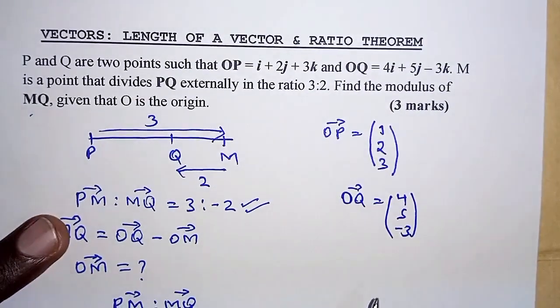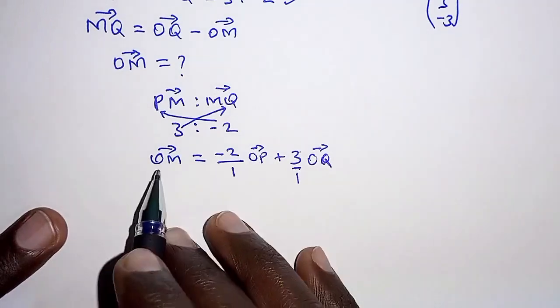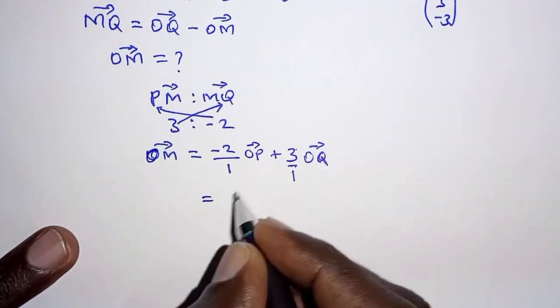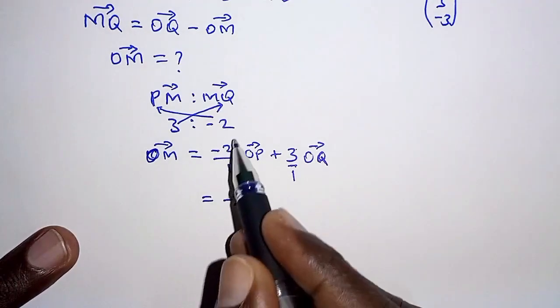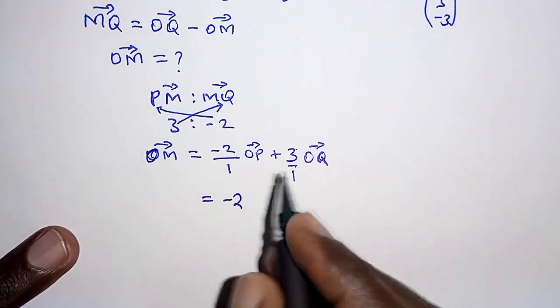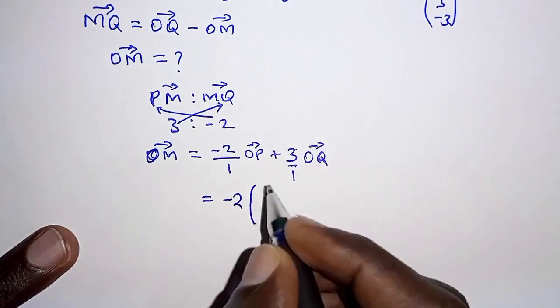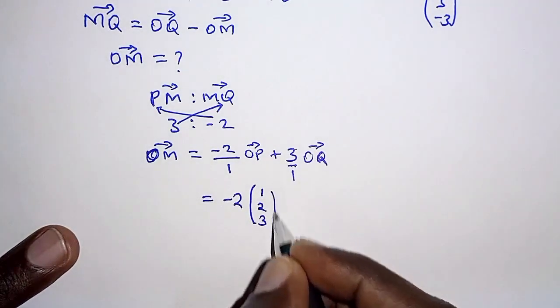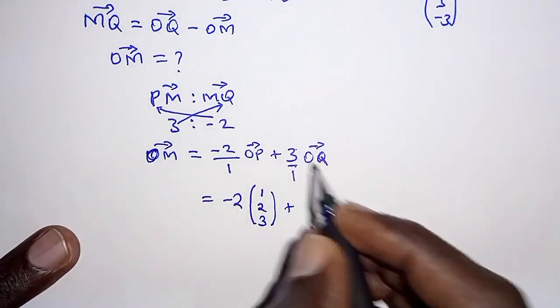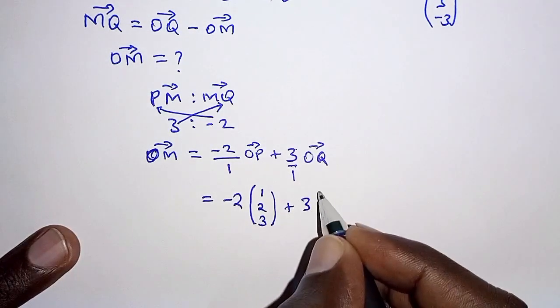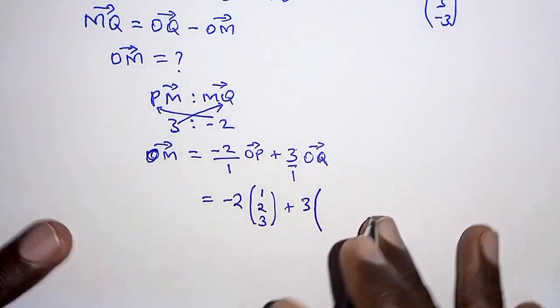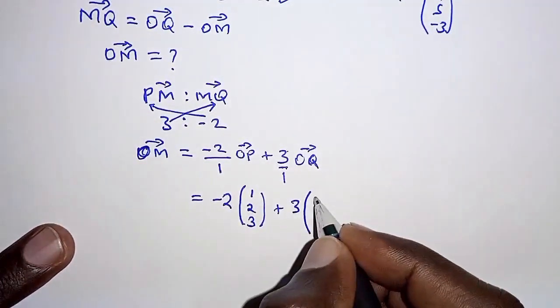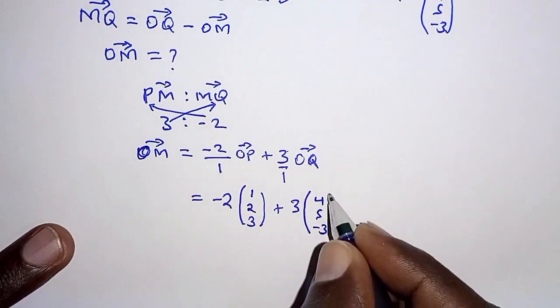We are going to apply them here. OM will be given as negative 2, that is negative 2 over 1 of OP, but OP we determined as (1, 2, 3), plus 3 into OQ. And OQ we already have as (4, 5, -3).